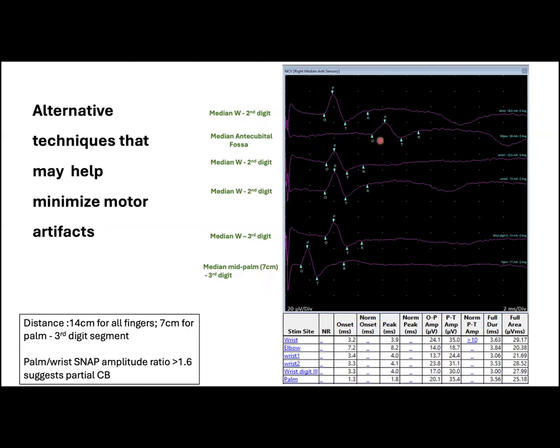The distal snap has normal amplitude and reduced conduction velocity, whereas in the proximal segment, the velocity is normal. But we have to make sure we are not under-stimulating the median nerve at the wrist.